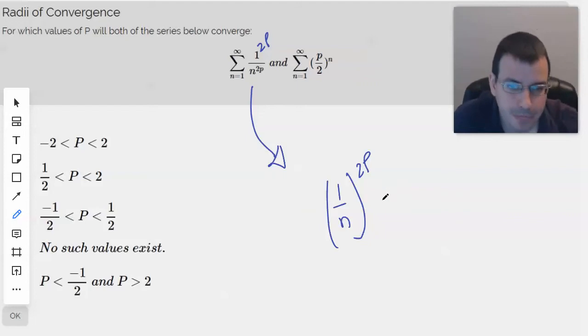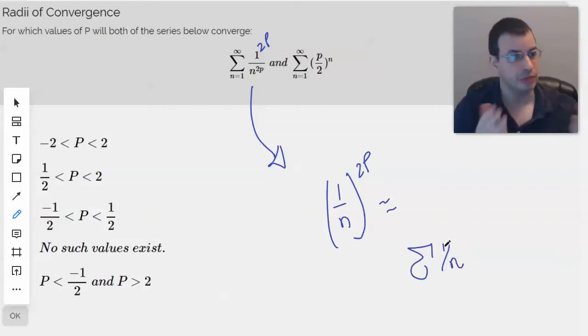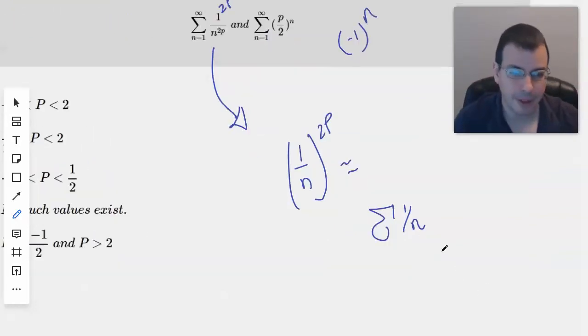Okay, so the question is, when does 1 over N converge? So you have the harmonic series, which is 1 over N, which, unless it's alternating, which this is not. Alternating means it includes something like negative 1 to the N, alternating between plus and minus. The harmonic series does not. This is the harmonic series.